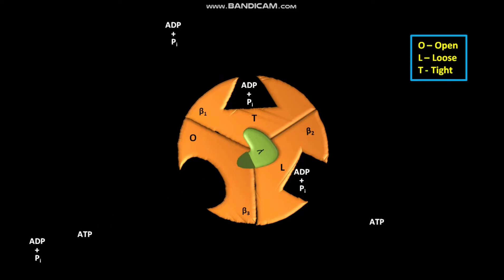Now the gamma subunit does not rotate, but the ADP and PI bound to the T site, or tight site, of beta1 subunit form ATP spontaneously. This ATP formation from ADP and PI does not require an input of additional energy, because the active site of the T state of beta1 subunit has a special environment. At the same time, a new ADP and PI bind loosely to the unoccupied O site, or open site, on the beta3 subunit.